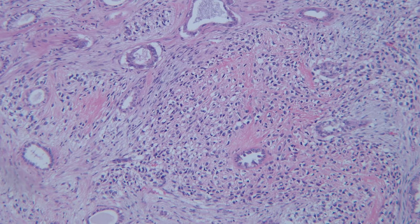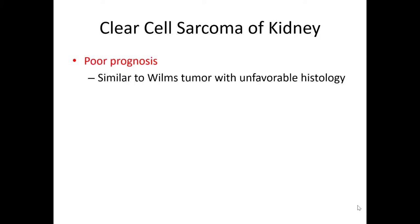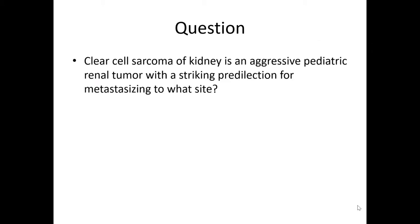So the best diagnosis, based on patient age, this mesenchymal spindle cell appearance together with the epithelioid population, with this pseudocytoplasmic clearing, is clear cell sarcoma. Clear cell sarcoma of the kidney is a malignant mesenchymal sarcoma of the pediatric kidney. They are pretty rare; the peak incidence is somewhere between ages 1 to 3, they are more common in boys, and they generally present with an abdominal mass, hematuria, and potentially hypertension. The prognosis is poor — similar to Wilms tumor with unfavorable histology. Question: clear cell sarcoma of the kidney is an aggressive pediatric renal tumor with a striking predilection for metastasizing to what site?